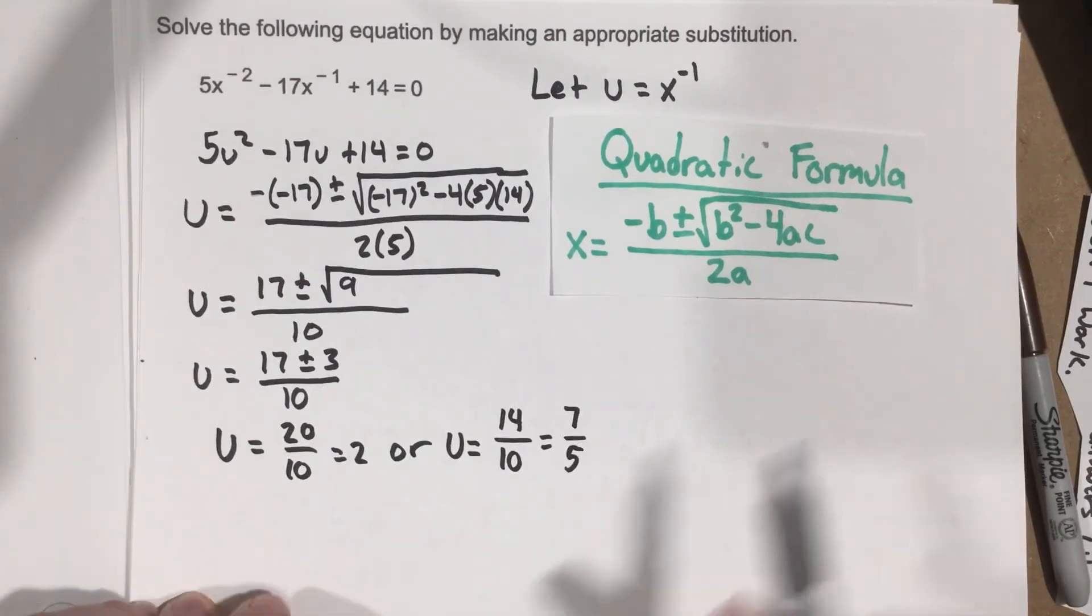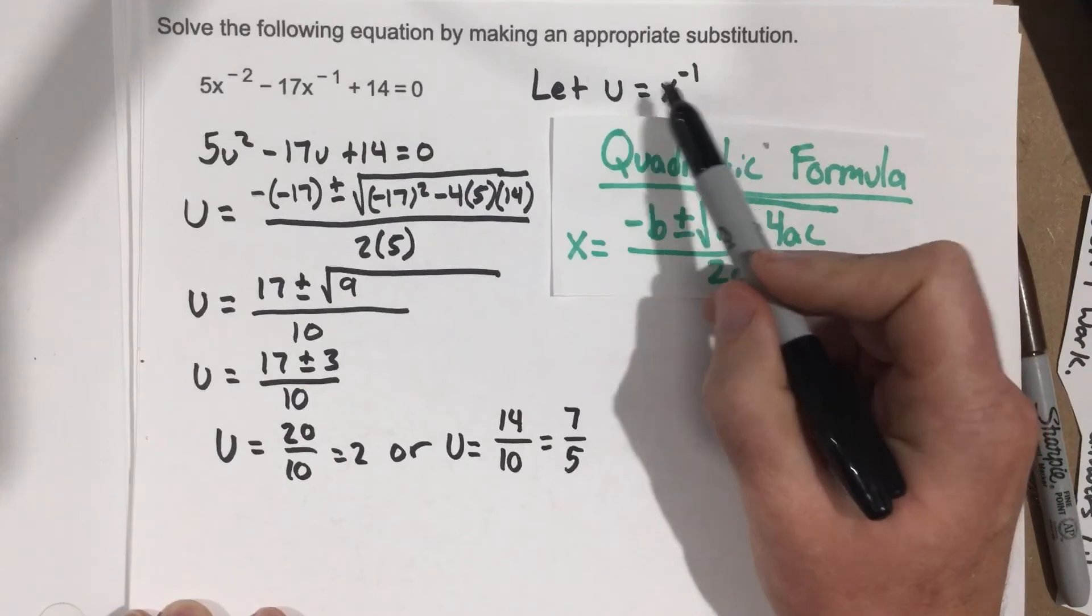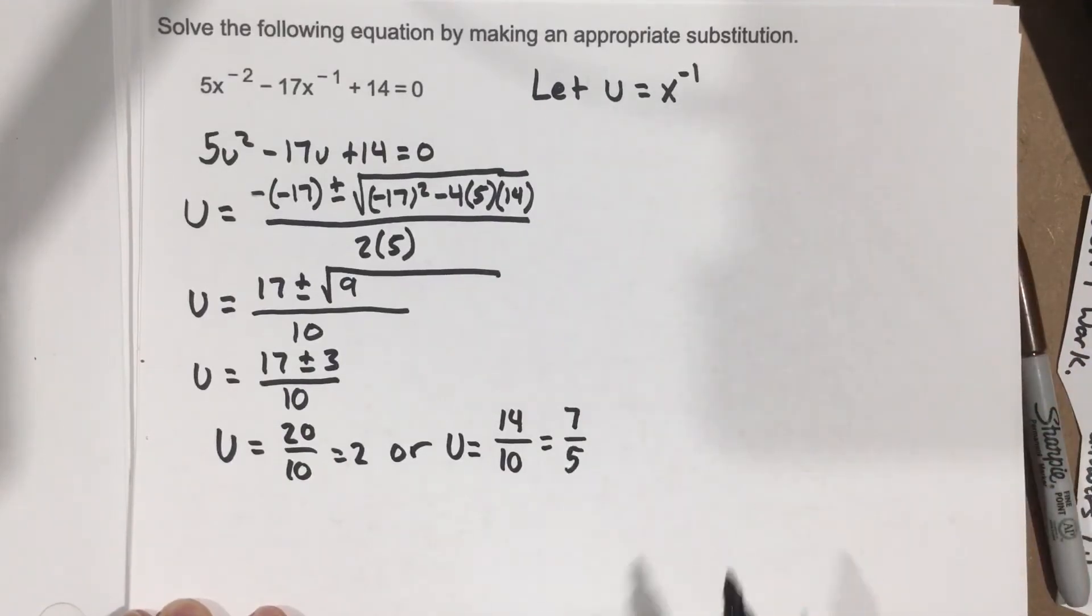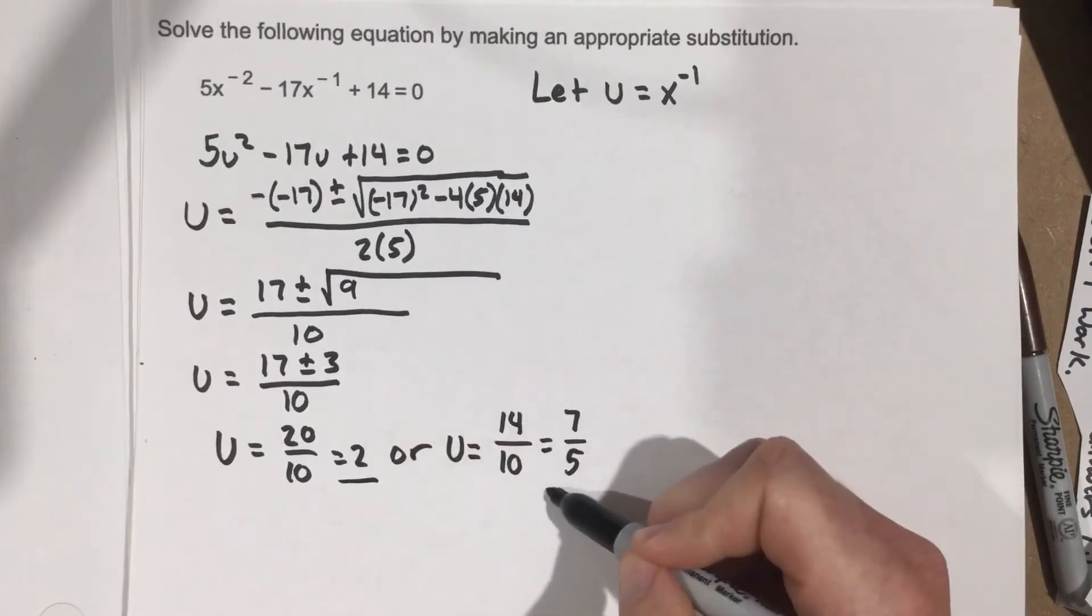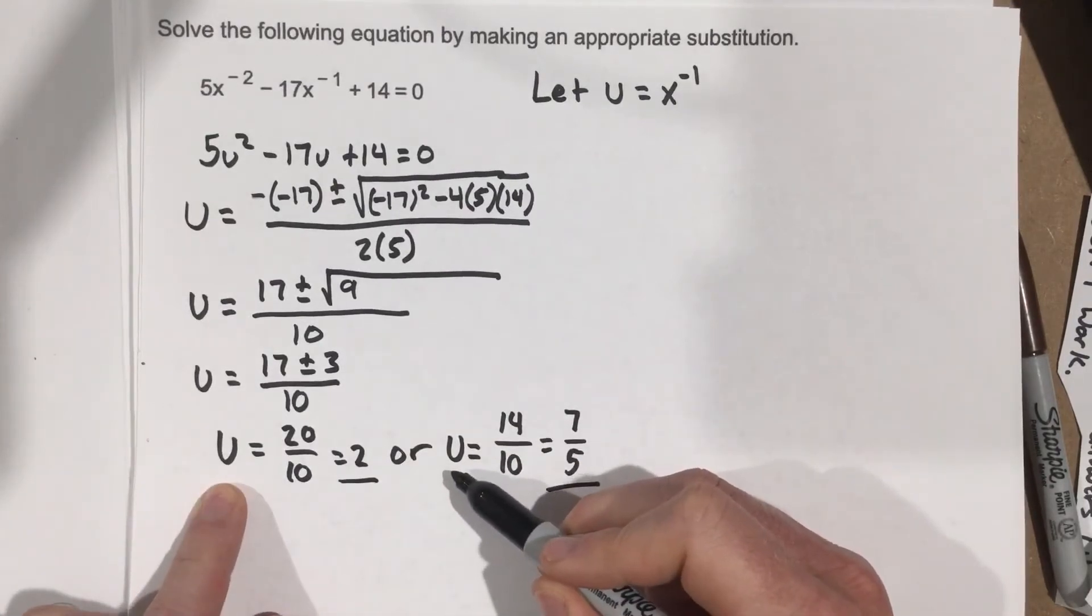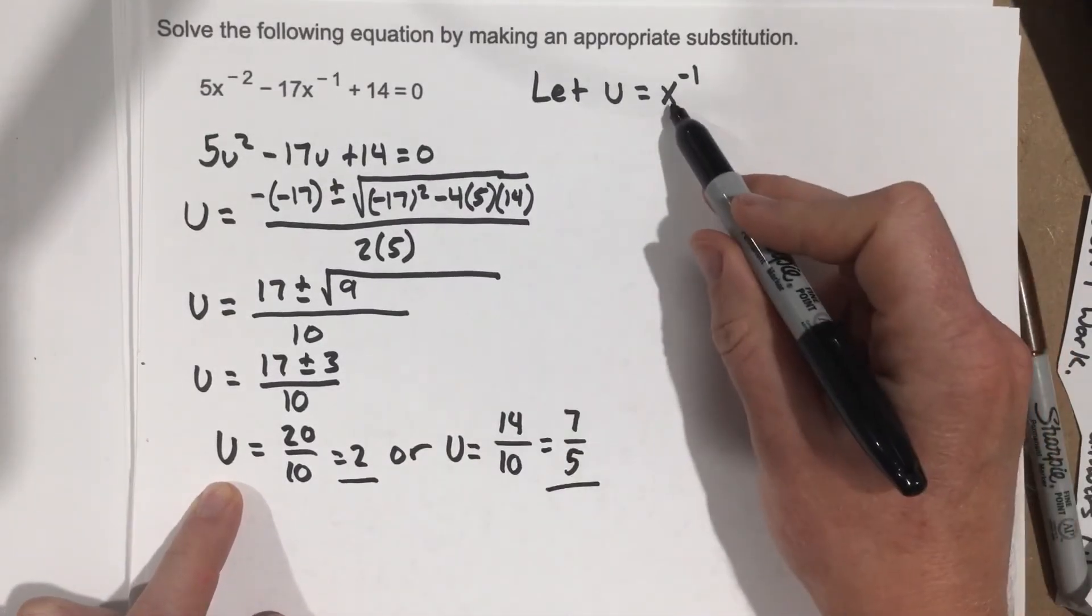Okay. This is where we bring back in the x to the negative 1. At this point, I've got a couple of solutions for u, but we're not trying to find u, we're trying to find x.